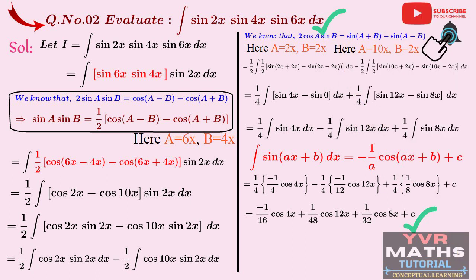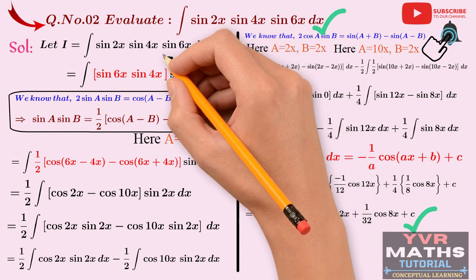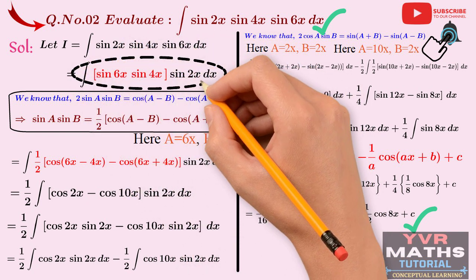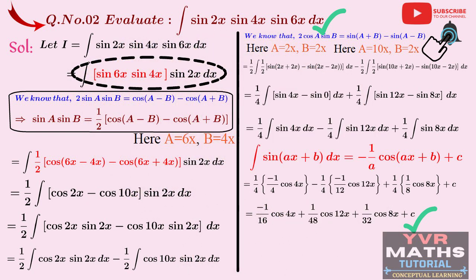One important note: in this problem I took the combination sin(6x)·sin(4x). You could also take sin(6x)·sin(2x), or sin(4x)·sin(2x) — any combination is fine. Whichever combination you choose, you will arrive at the same final answer. This is an important point to remember. I hope you understand this concept.